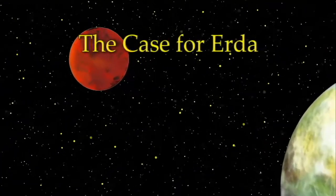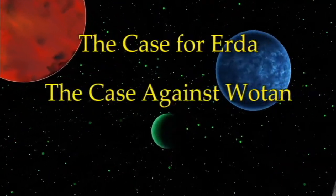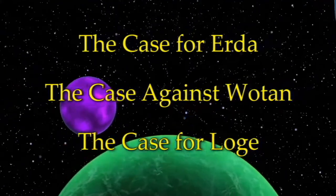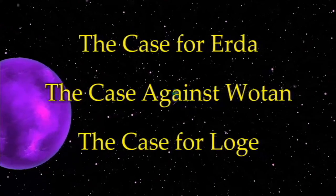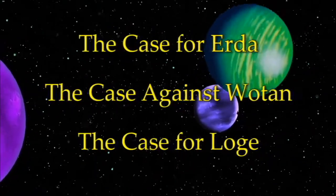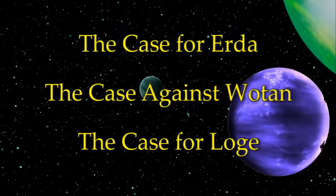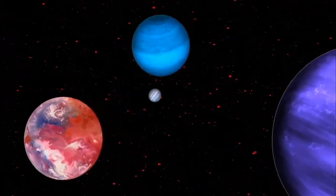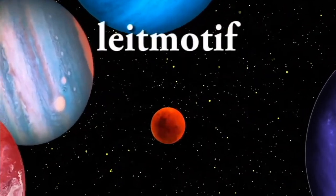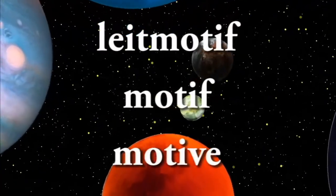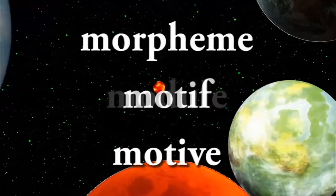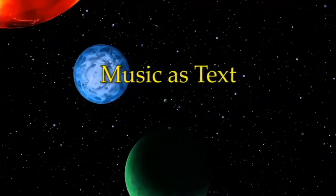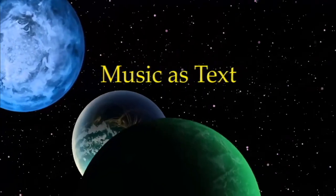Before diving into this video, you may want to watch The Case for Erda, The Case Against Wotan, and The Case for Loge, which present my views on how and why Wagner manipulates his musical syntax as he does, in the process identifying key morphemes which I believe define the entire work. You'll find explanations for why the terms leitmotif, motif, and motive have been replaced by morpheme, module, and cell in the chapter titled Music as Text. Links are provided in the comments below.